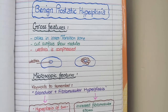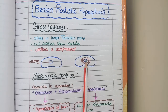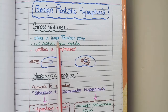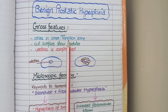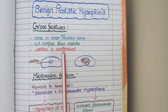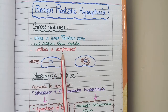Thirdly, as benign prostatic hyperplasia is present in the central zone, it has a tendency to compress the urethra. On gross specimen, you can see the urethra may be compressed. So overall on gross specimen, benign prostatic hyperplasia arises from the inner transitional zone of the prostate, its cut surface shows nodules, and the urethra may be compressed.